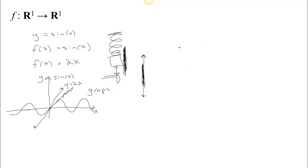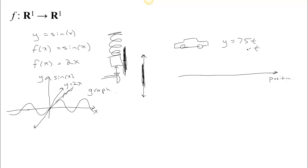What if we had a car going down the highway? We measure position based on mile markers, so we think about just one axis to represent the position as a function of time. If you're going 75 miles an hour, position would be 75t where t is in hours. For a 3-hour trip, we go from 0 to 225. We could look at this as a parametrization — just this segment, pretty boring — going out in that direction, just looking at the outputs.